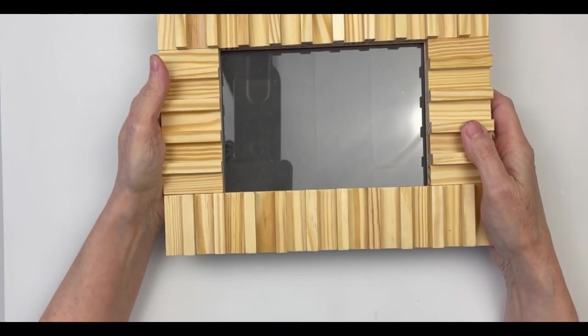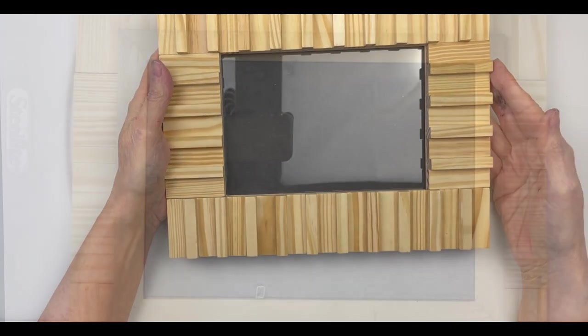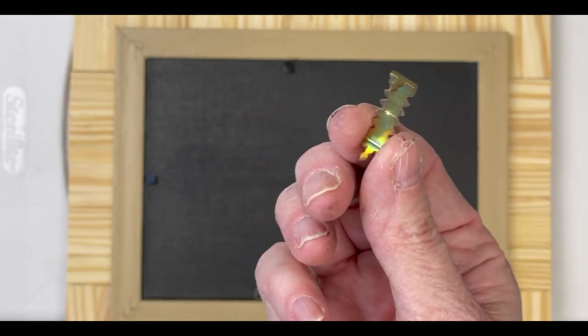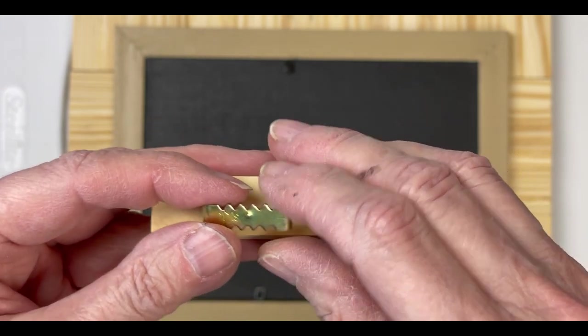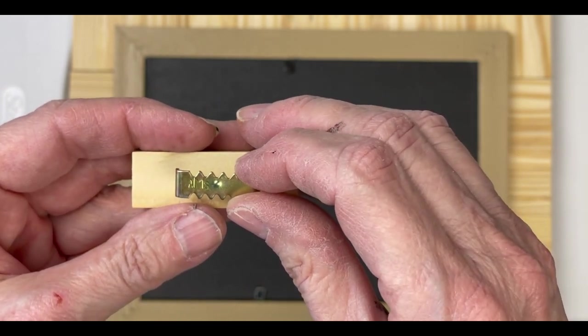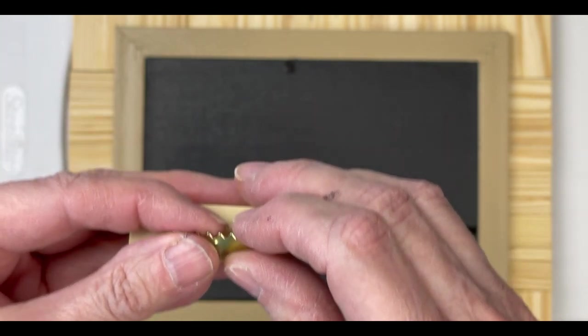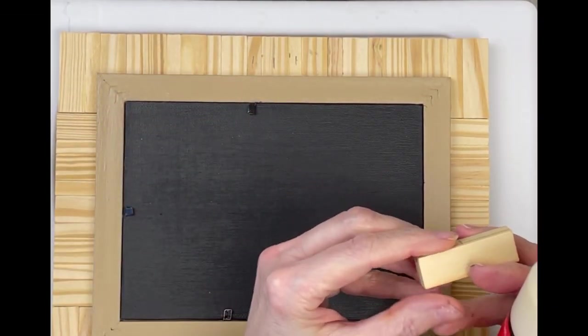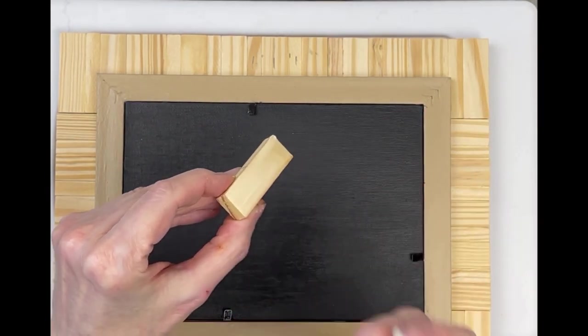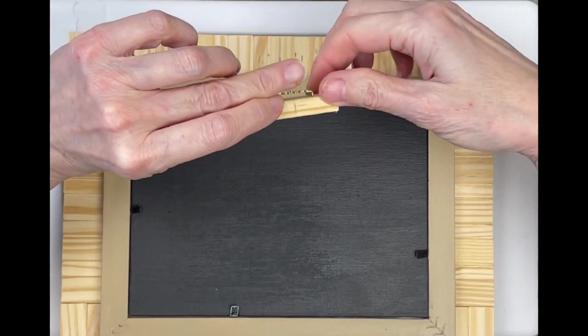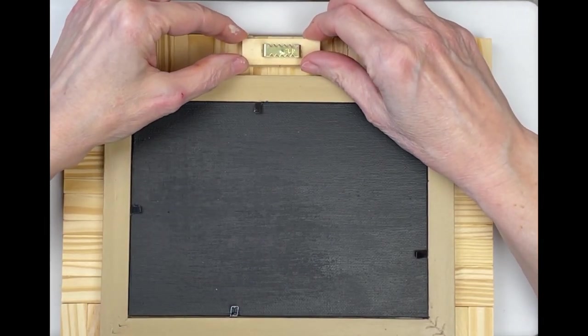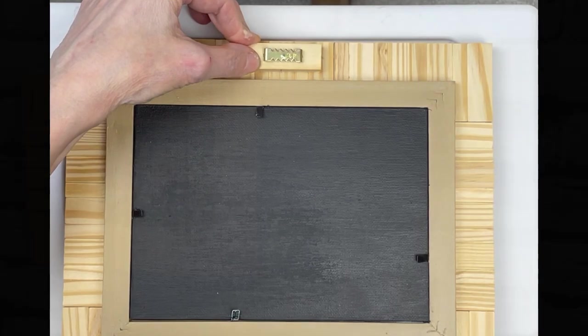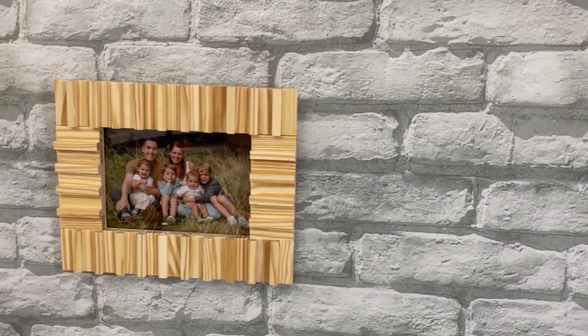I chose a sawtooth hanger, the kind that you tap into the frame itself. But I didn't want to tap into those blocks. They're not strong enough. Plus, I needed the hanger to rise up above the Dollar Tree frame. So, I tapped it in to one of those wood blocks and then glued that wood block to the wood frame. This worked out absolutely perfectly. It was nice and strong and in a real good position. And this is what it looks like hanging on the wall.